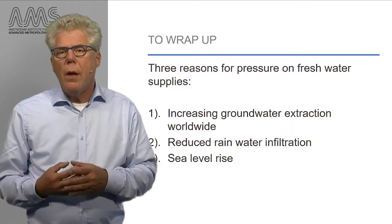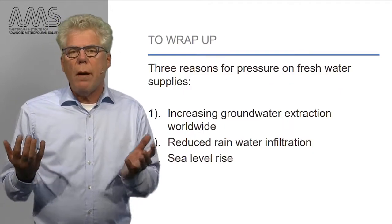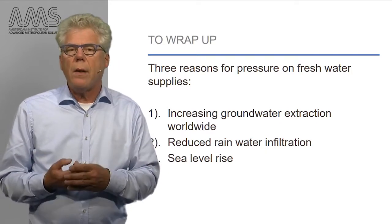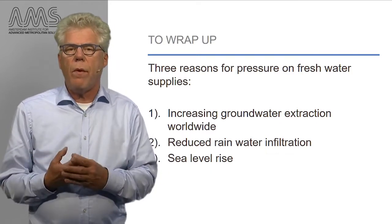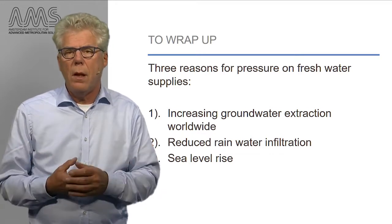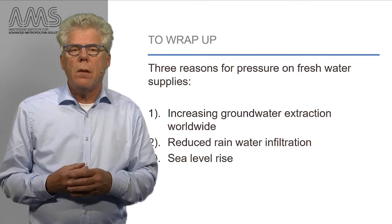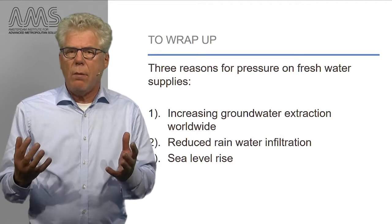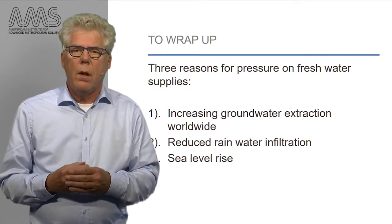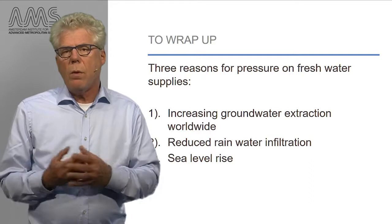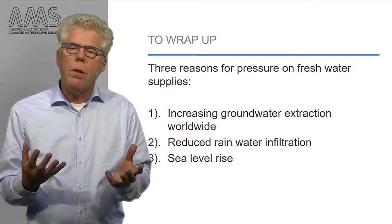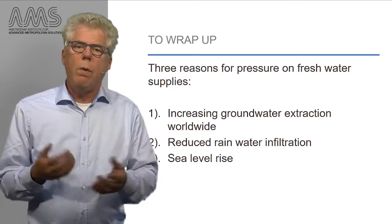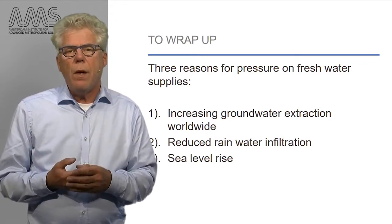In summary, urbanized coastal areas and the surrounding agricultural lands are under threat from three factors that influence the state of fresh groundwater stocks worldwide: increasing groundwater extraction, reduced rainwater infiltration, and sea level rise driving saltwater intrusion — all of which put groundwater resources at risk. In conclusion, delta cities have to cope with reduced freshwater availability. Do you have any ideas how to solve this problem?